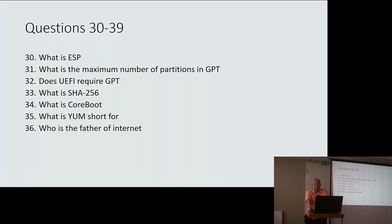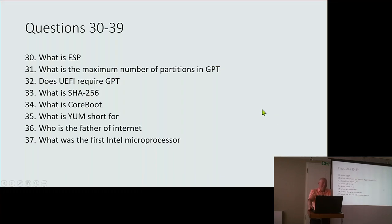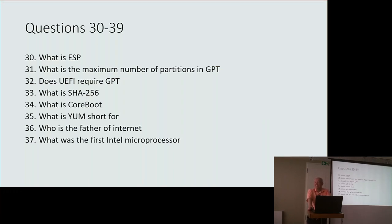Question 37: What was the first Intel microprocessor? The first one. What you would consider the first one — to make it more ambiguous. I'll give you a clue: it's only four numbers long, and it's not the 68000 from Motorola.